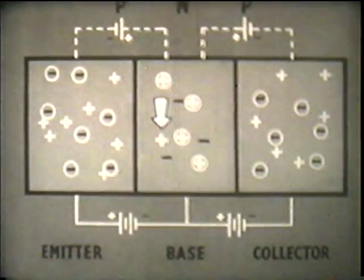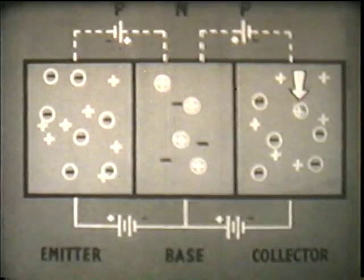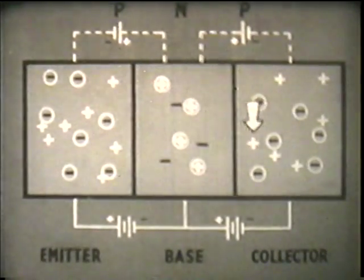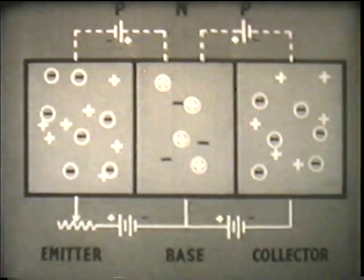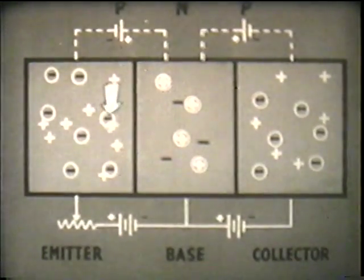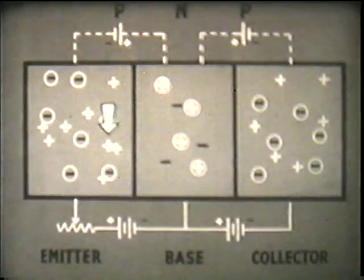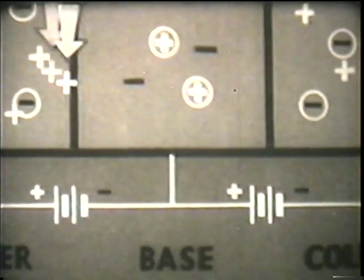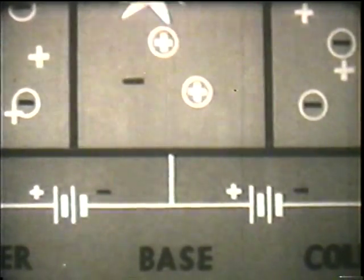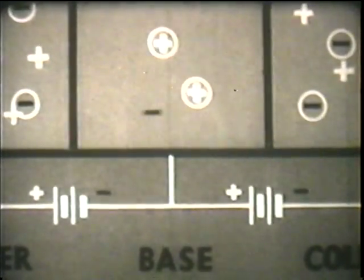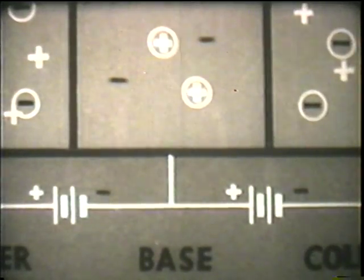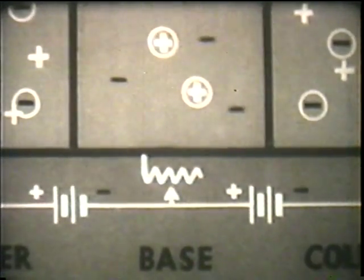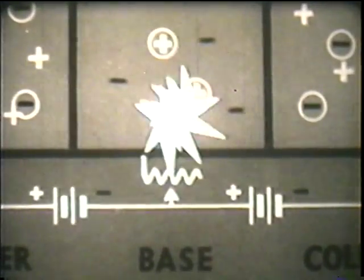Positive holes from the emitter flow into the base. There, they will be attracted across the base-collector junction into the collector, because the collector is negative. With this resistance, we can control the number of positive holes to the base. These, in turn, determine the current which can flow in the base-collector circuit on the right. Not all the positive holes from the emitter flow into the collector. Some of these remain in the base long enough to combine with free electrons there and become neutralized. This gives rise to a small current of electrons flowing into the base to replace those used up in the neutralization process. By varying the flow of electrons into the base, we can in fact control the number of holes which reach the collector. It is this control of positive holes which makes it possible for a transistor to amplify.